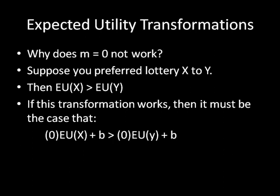The reason you can't use m equals zero is: if you prefer lottery x to lottery y, and you apply that transformation, you'd need zero times EU(x) plus b to be greater than zero times EU(y) plus b. But subtracting b from both sides gives you zero is greater than zero, which is absolutely not true. Essentially, setting m to zero makes the utility of every single outcome equal to b, so you'd be indifferent between everything.